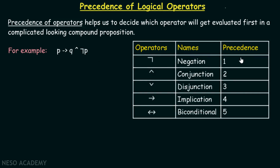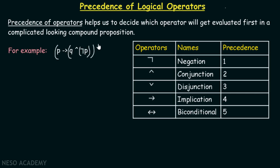Here is the precedence table. These are the operators, their names, and precedence. Negation has the highest precedence among all the other operators. Then after negation, conjunction comes up, then disjunction, then implication, and then biconditional. So negation will be performed first, then conjunction, and then implication.